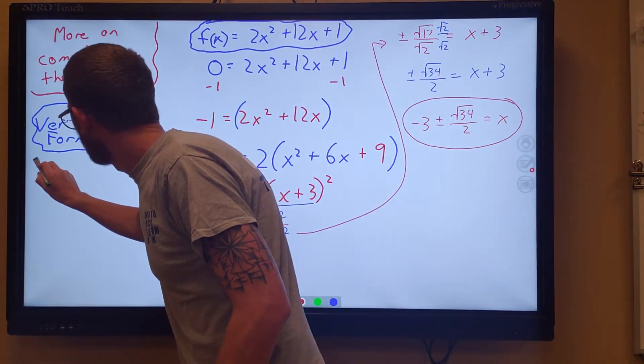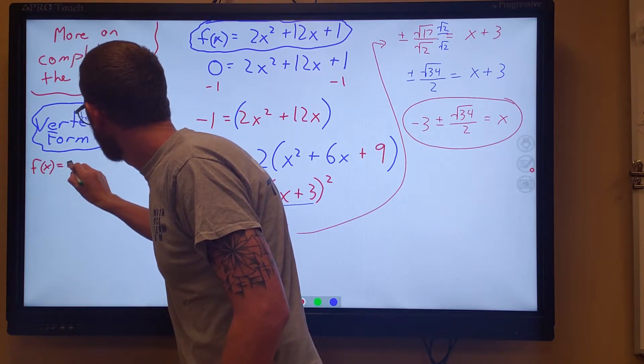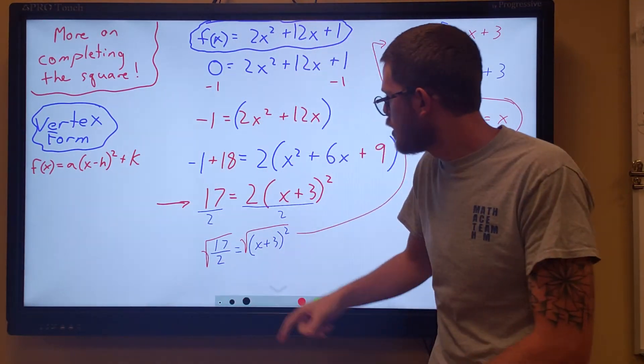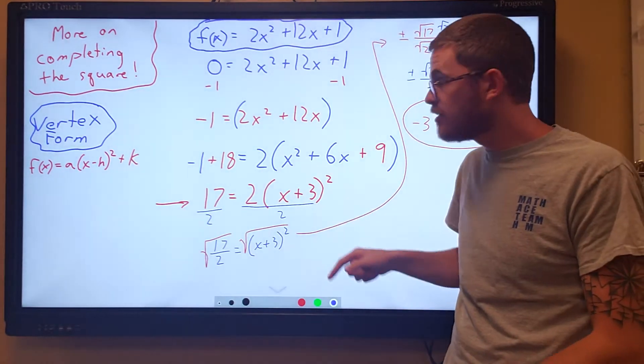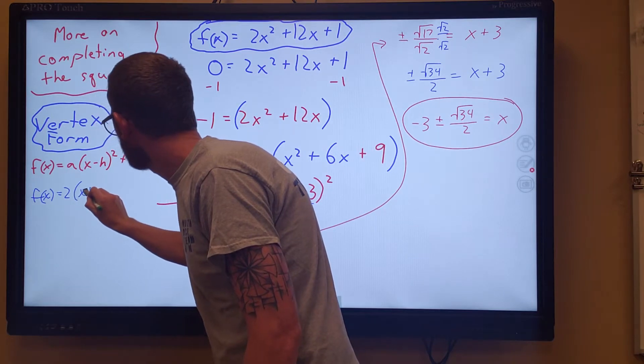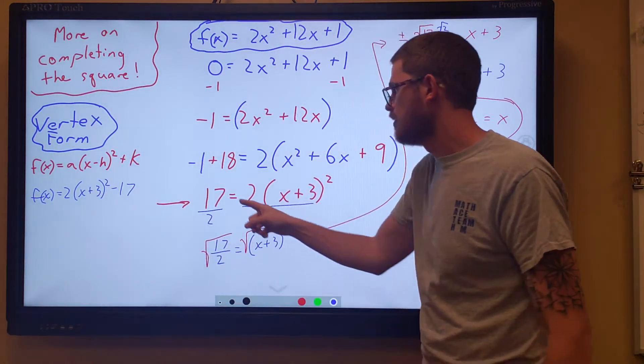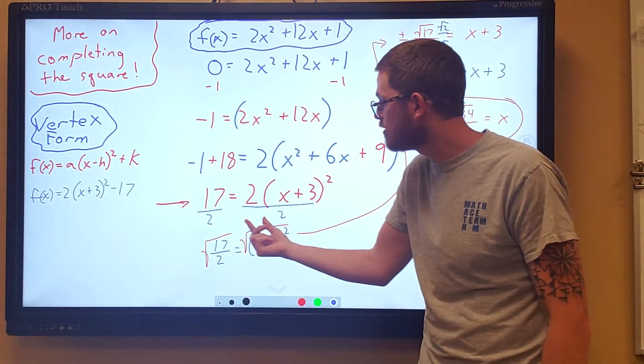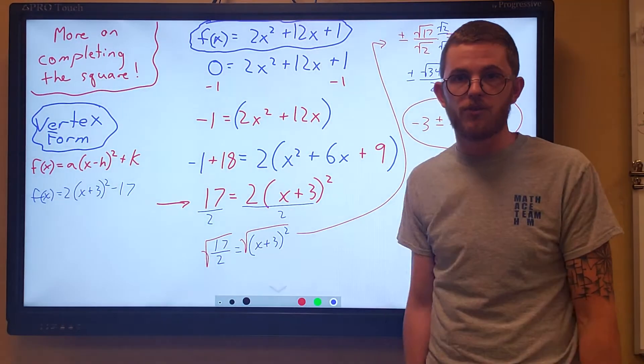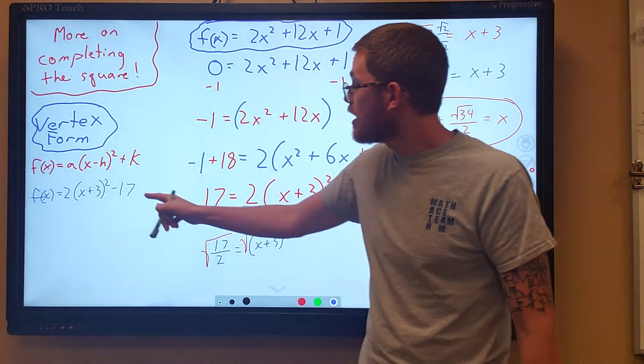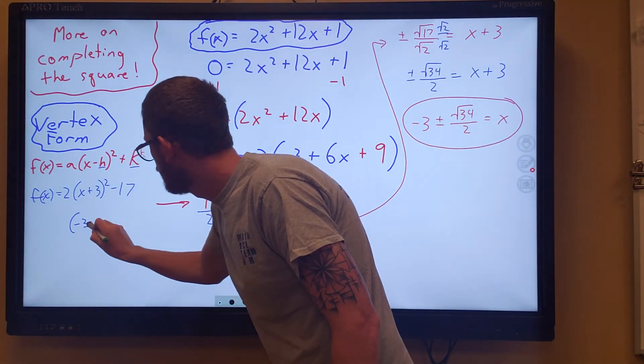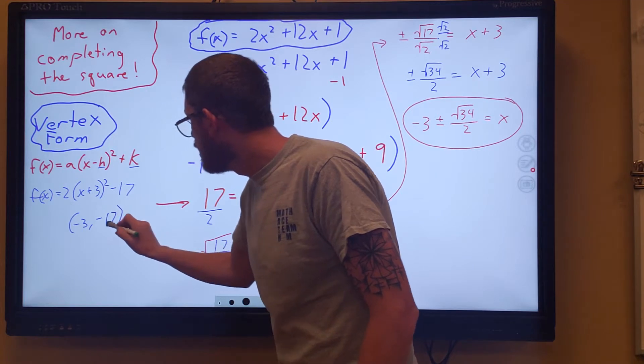In order to get to vertex form, vertex form looks like this. And right here, if we just subtract over the 17, we would have f of x equals 2 times x plus 3 squared minus 17. Move that 17 over. Instead of set equal to 0, it's f of x once again. And that is vertex form. We pretty much found that along the way. And the vertex is h and k. It's always the opposite sign of the number on the inside, the same sign of the number on the outside. That is our vertex.